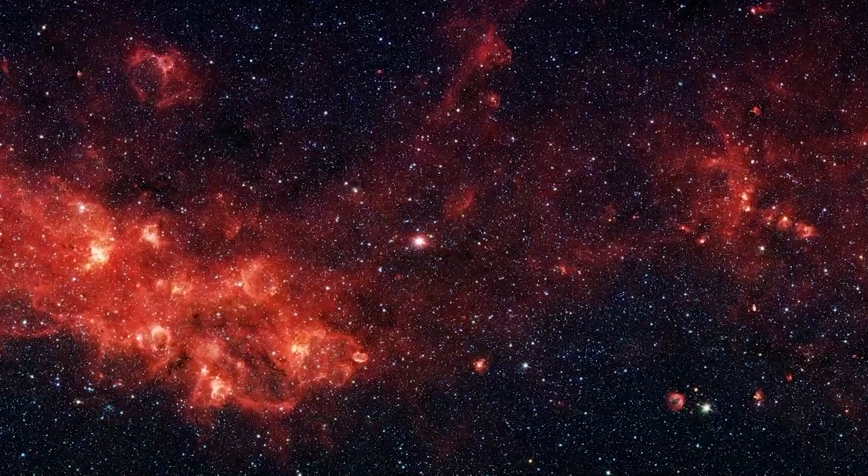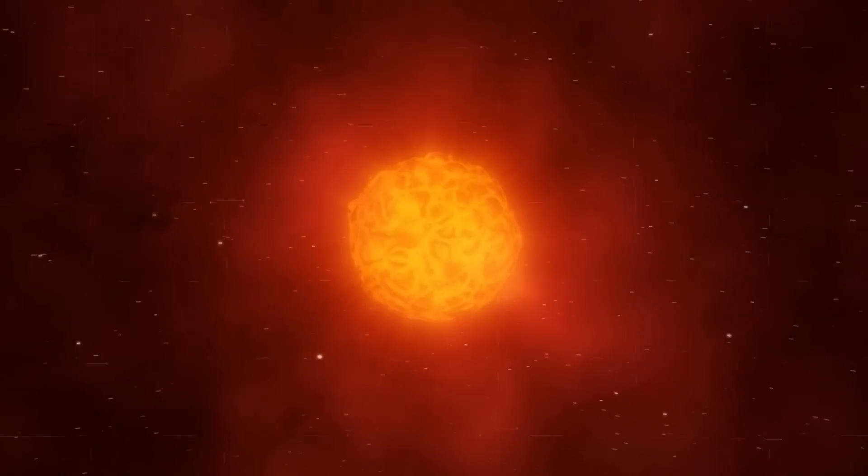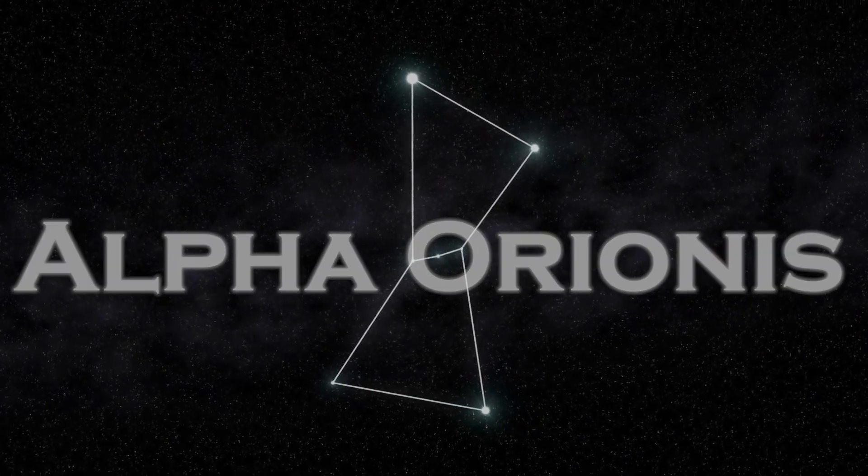The glowing ruby star, Betelgeuse, lies on the upper right shoulder of Orion, the Hunter. You may recognize it by its other name, Alpha Orionis.